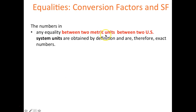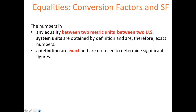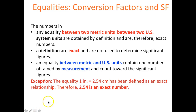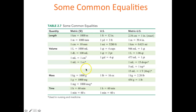Within the metric system or within the US system, all equalities are exact — you don't apply significant figures to conversion factors within the same system, because by definition they are exact. However, if you have an equality between metric and US units, you treat it as a measurement and count sig figs. The exception is one inch equals exactly 2.54 centimeters — that is considered exact, not three sig figs.